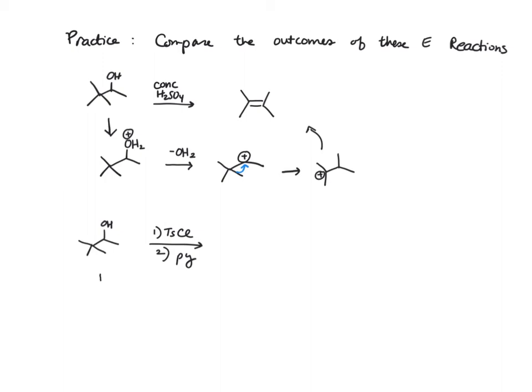Then when we undergo elimination, we want to produce the more substituted alkene, which gives us this product. By contrast with tosyl chloride pyridine, we first convert that alcohol into a tosylate. And we actually need a second step here, so we're going to use sodium methoxide. And we have to use one of these protons. And we do elimination in one step, and that gives us this alkene. So the reaction that you choose to do with your alcohol is going to affect which product you get.